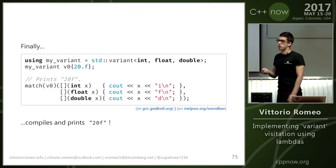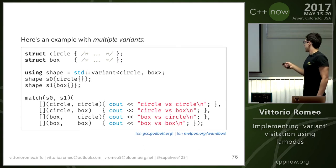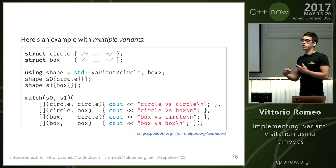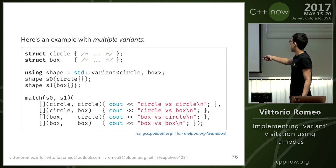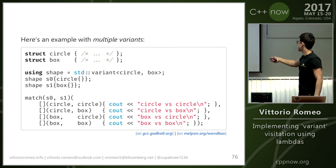Here's an example with multiple variants. Using the circle and box example — shape is a variant between circle and box — we simulate collision detection. We say s0 is a circle, s1 is a box, match both at the same time, and provide a bunch of binary lambdas covering all possible combinations between the variant alternatives. Since s0 is circle and s1 is box, the second lambda will be invoked, printing 'circle versus box.'